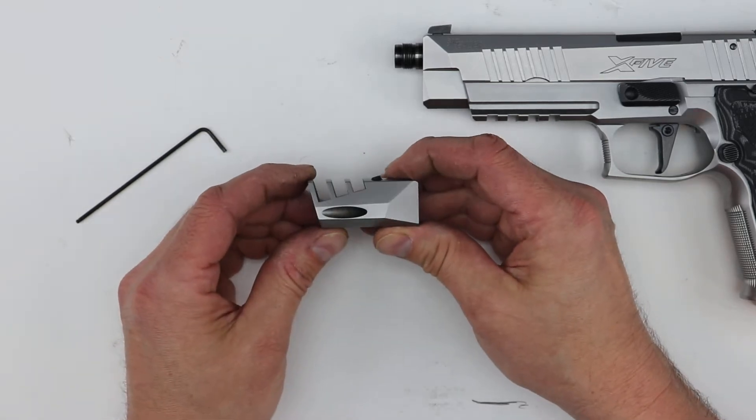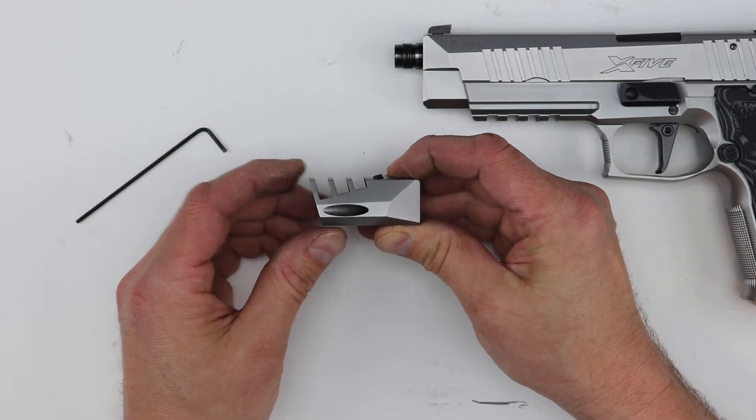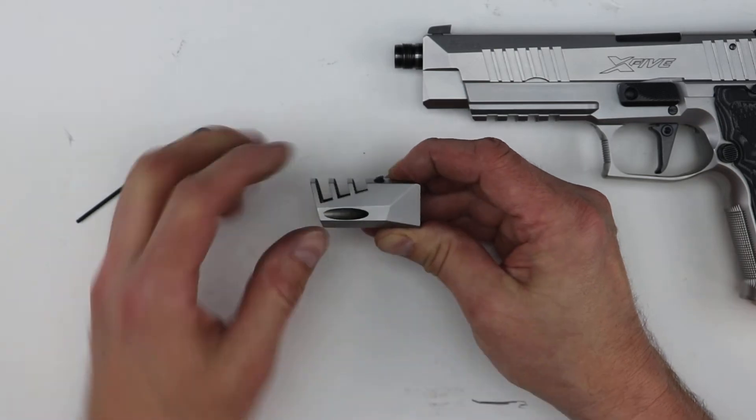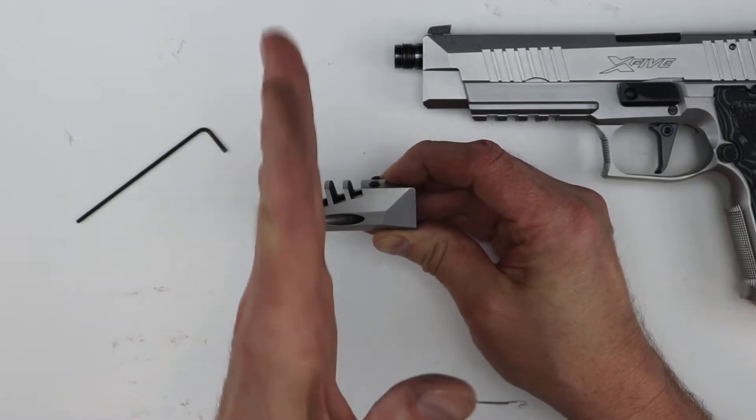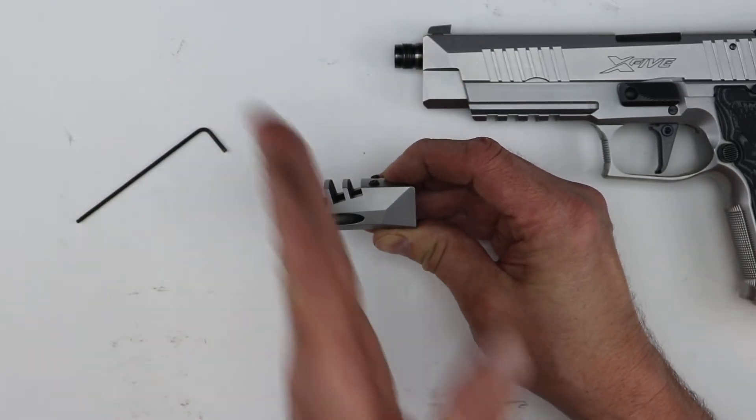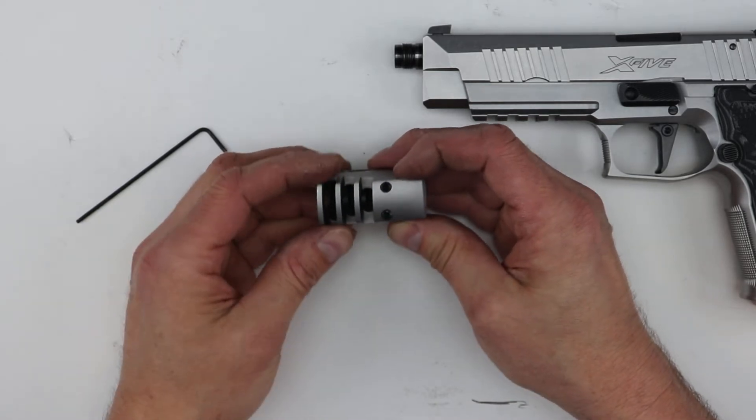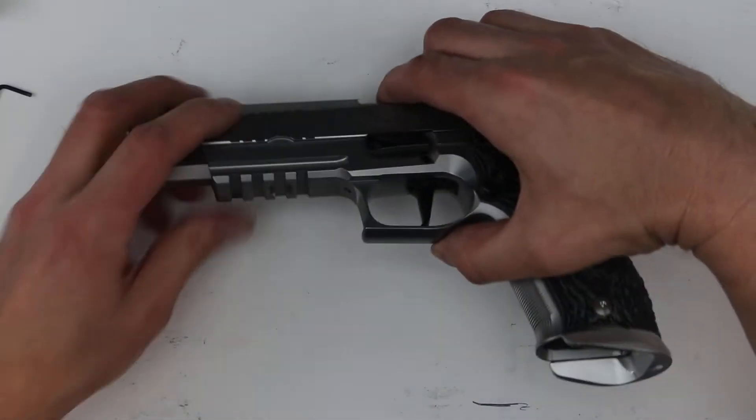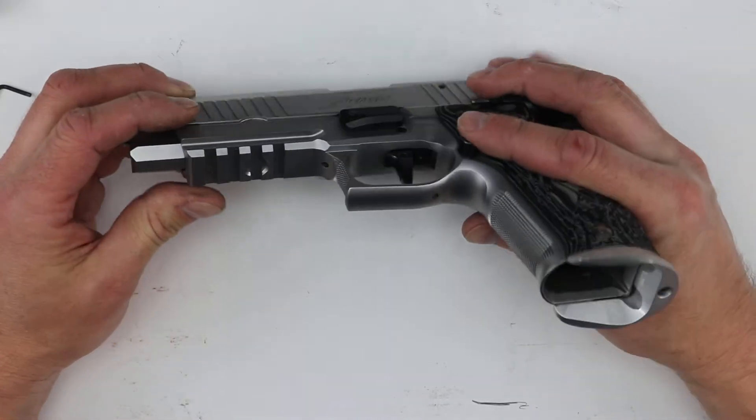The other thing is the compensator. I don't know if I mentioned this. The comp, these ports are sort of slanted forward. Usually comps are all straight up, but on this they sort of slanted it forward, which is a little bit different as well.